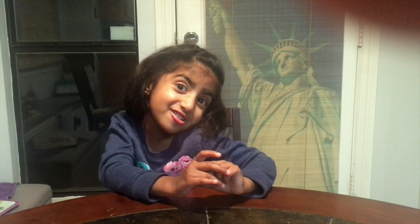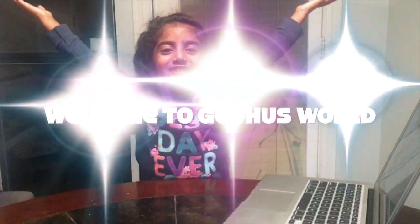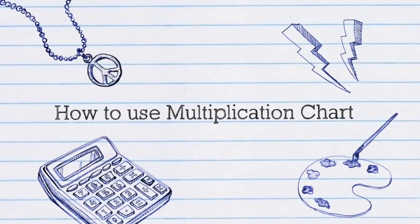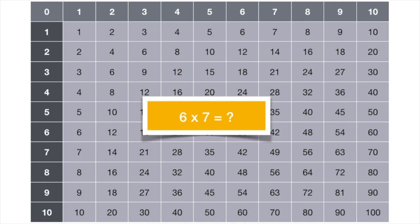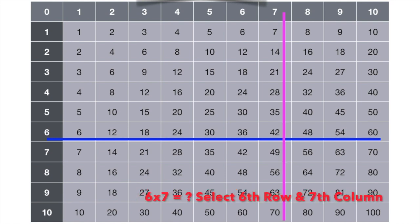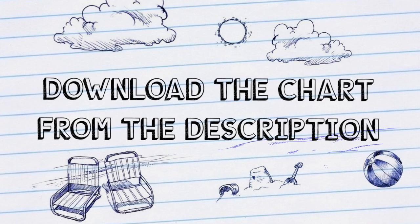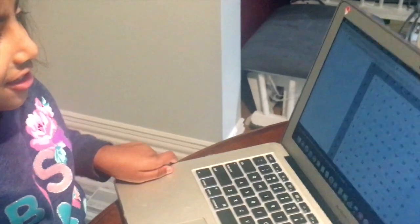8 times 4 is 32. Hi everyone, my name is Grace. Welcome to Get Your Family. Today I'm going to give everyone an easy way to do multiplication with this. Download the chart from the below link. Let's get started.